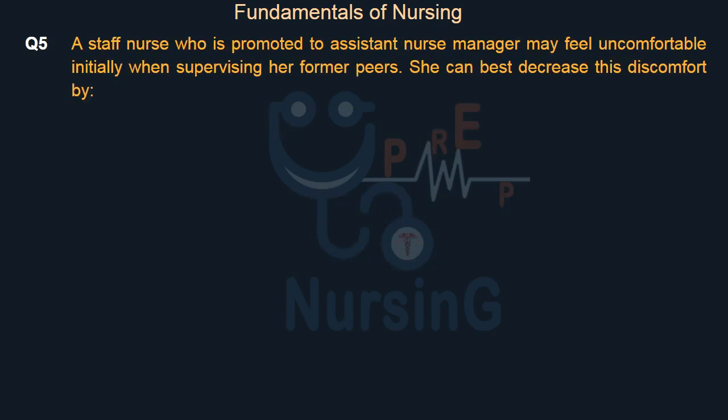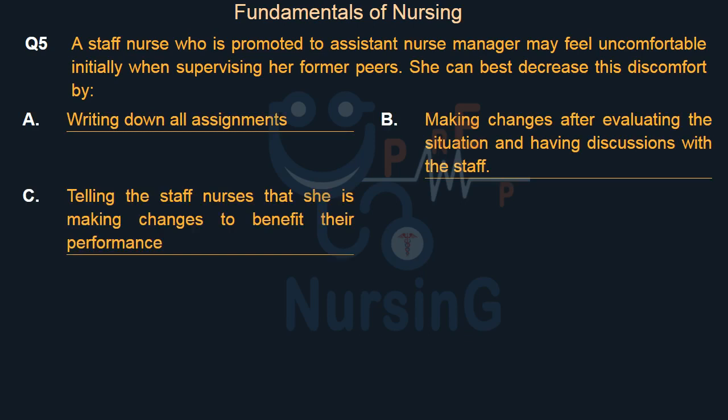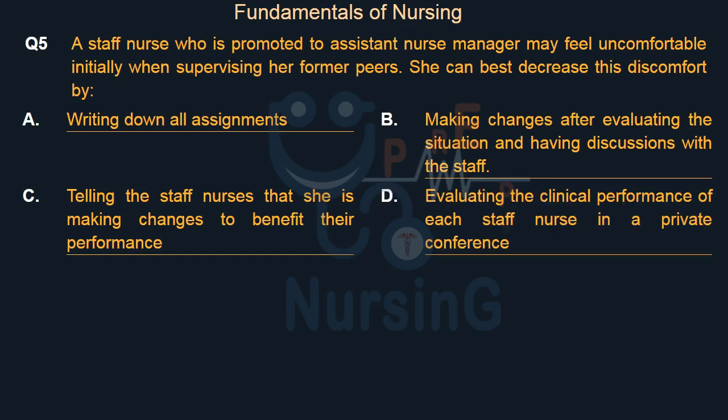A staff nurse who is promoted to assistant nurse manager may feel uncomfortable initially when supervising her former peers. She can best decrease this discomfort by: Option A: Writing down all assignments. Option B: Making changes after evaluating the situation and having discussions with the staff. Option C: Telling the staff nurses she is making changes to benefit their performance. Option D: Evaluating the clinical performance of each staff nurse in a private conference. The right answer is Option B.